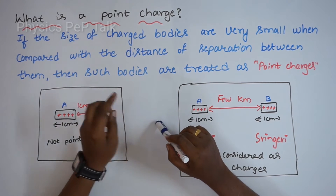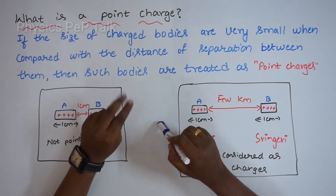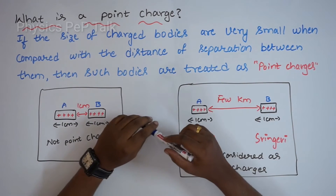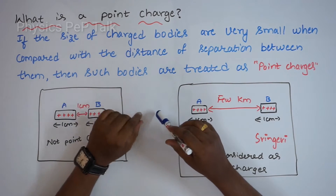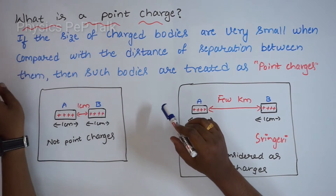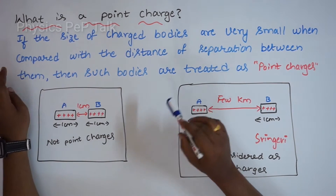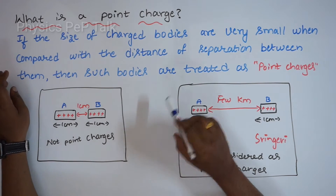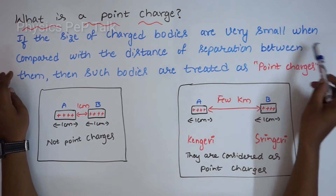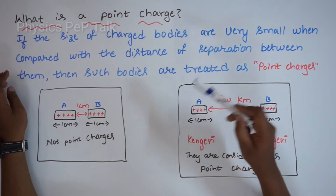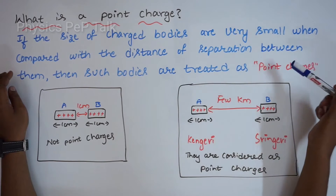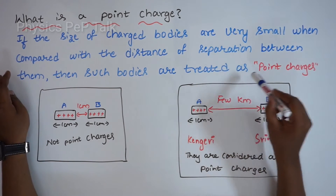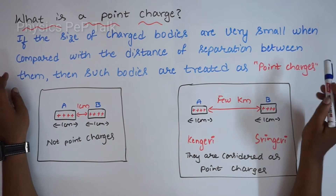Let us consider two point charges. Now let us see what is a point charge. If the size of the charged bodies are very small when compared with the distance of separation between them, then such bodies are treated as point charges.